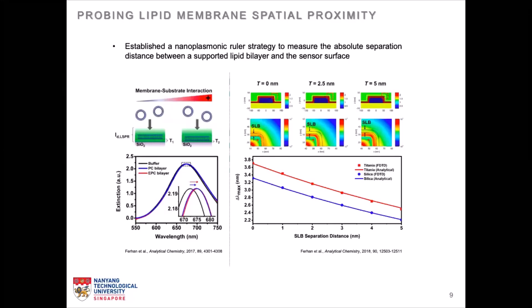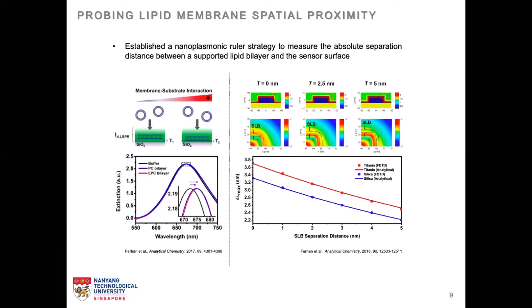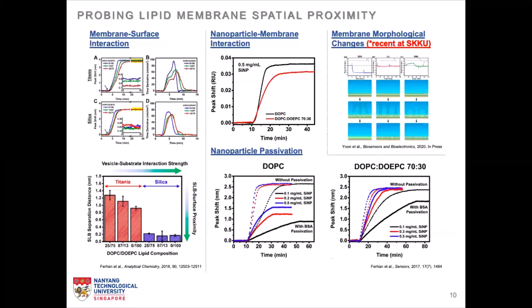To understand the dependency of the signal response on variation in this distance, we conducted FDTD simulations with the help of Professor Jiri Homola's group at the Czech Academy of Sciences. We simulated lipid bilayers with different separation distances from the surface — comprising either silicon oxide or titanium oxide — and found that the dependency is almost linear. We observe a high degree of peak shift when the lipid bilayers are close to the surface, and the peak shifts decrease as you move away. The correlation is almost linear at this range of separation distance, which greatly simplifies analysis, and we can use this principle to understand membrane-surface interactions.